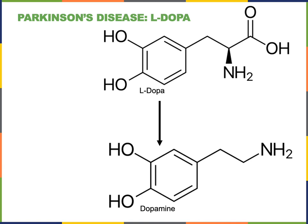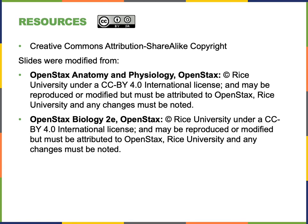Another approach for the treatment of Parkinson's disease is deep brain stimulation, which involves electrodes implanted into the basal nuclei to disrupt the indirect pathway, helping to increase motivation to initiate motor commands.